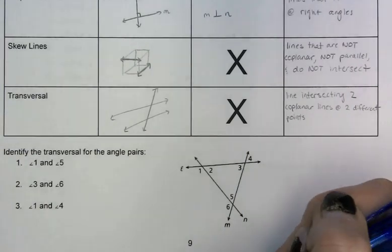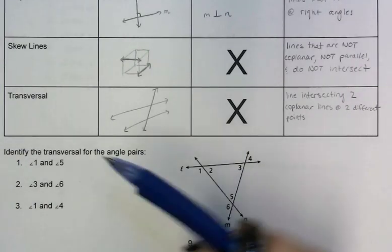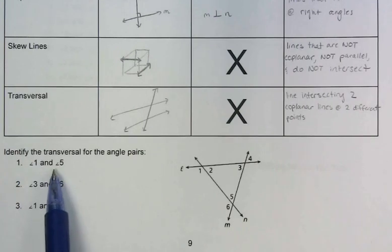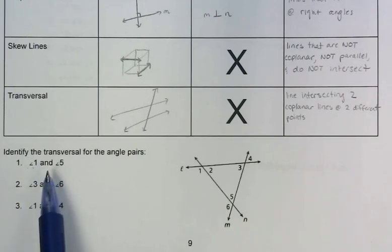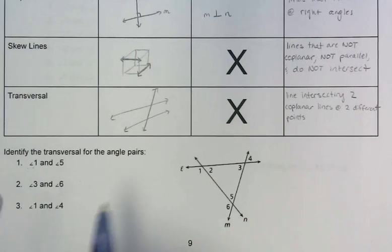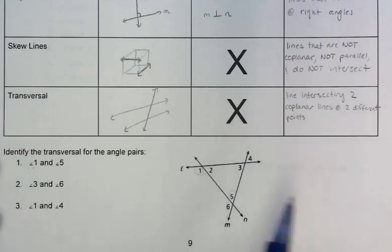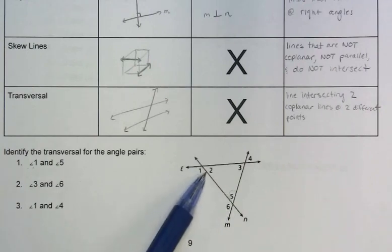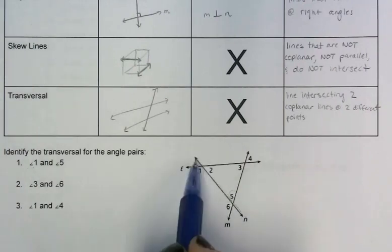In these examples they're asking me to identify the transversal for the angle pairs — meaning, what line are these two angles on or next to? If I look at angle 1 and angle 5, the line that they are both on: angle 5 is on this line and angle 1 is as well, so they share this line. This is the transversal.